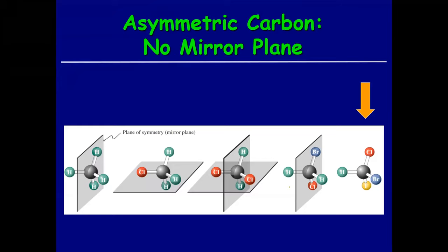Methane has many centers of symmetry. Chloromethane again has three centers of symmetry. Dichloromethane would have two. Bromochloromethane has one, and then if you were to have bromochlorofluoromethane, at that point that would be a chiral structure - a structure that has no mirror images.